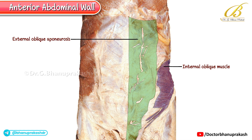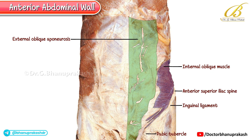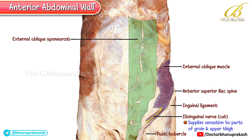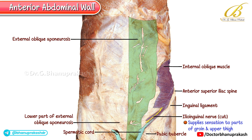If you look carefully, you can also identify the inguinal ligament, which is an important landmark running from the anterior superior iliac spine to the pubic tubercle. Along with it, the ilioinguinal nerve can be seen, which supplies sensation to parts of the groin and upper thigh. Another key feature in this image is seen in the lower part of the external oblique aponeurosis, where it is pierced by the spermatic cords on both the right and left sides.